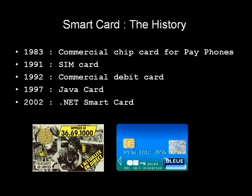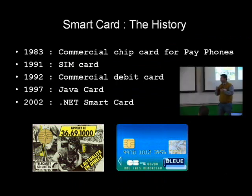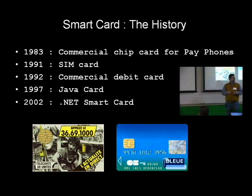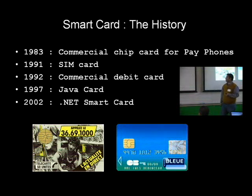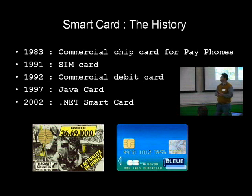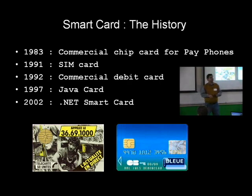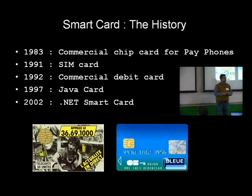A little bit about the history of smart cards. The first commercialization occurred in 1983 in France for pay phones — you could store points in the card without needing backend infrastructure. In 1991, SIM cards were created as the backbone of the GSM industry. 1992 saw the commercial debit card in France called Carte Bleue, which is a de facto standard there. From a programmer's perspective, two major events in smart card history were the invention of Java Card and the innovation of .NET Card.